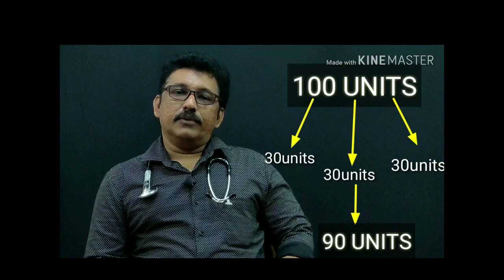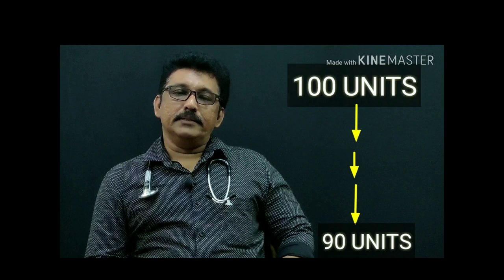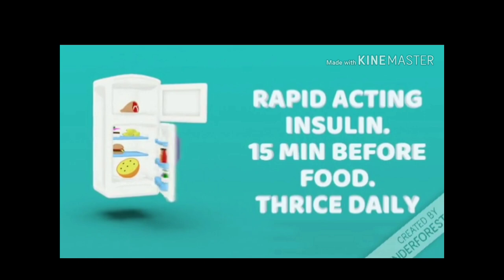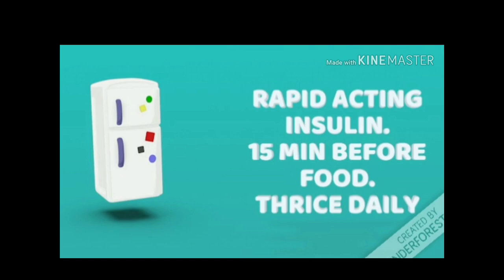From the infusion you can slightly reduce the dose for fixed dose subcutaneous, because the patient is stabilized, his infection has come down, and his activity is going to increase in the ward. So 30 units 3 times daily, given 15 minutes before food — this is regular, rapid-acting insulin, which was previously given as an infusion, now switched to fixed dose.